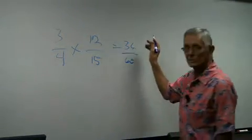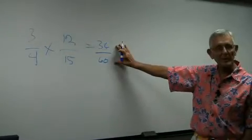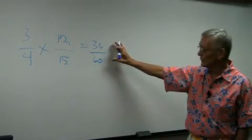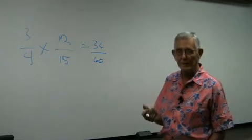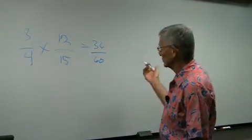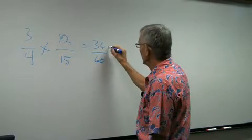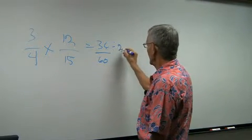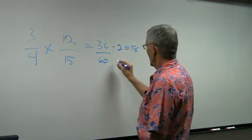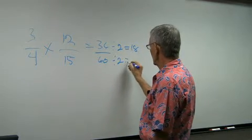Now we can reduce the answer down because they're both even numbers, and any time you have both an even number numerator and denominator, they're always reducible, maybe more than once, maybe just once. Since they're both even numbers, we can divide them both by 2, so this one divided by 2 would give me 18, and 60 divided by 2 would give me 30.